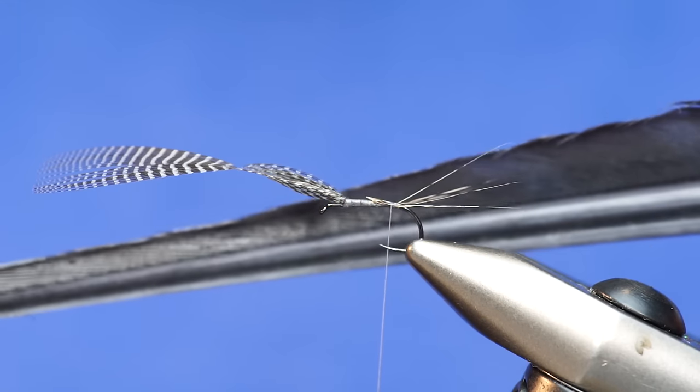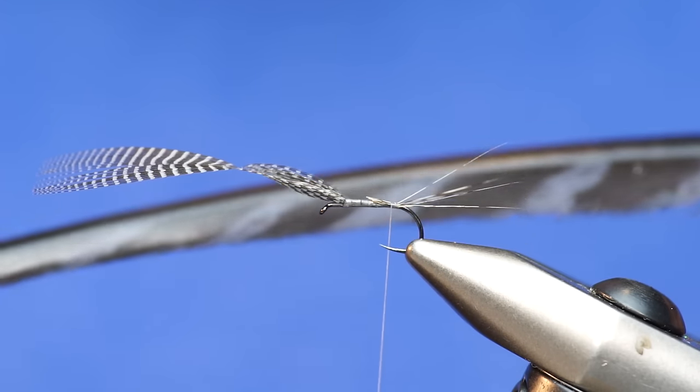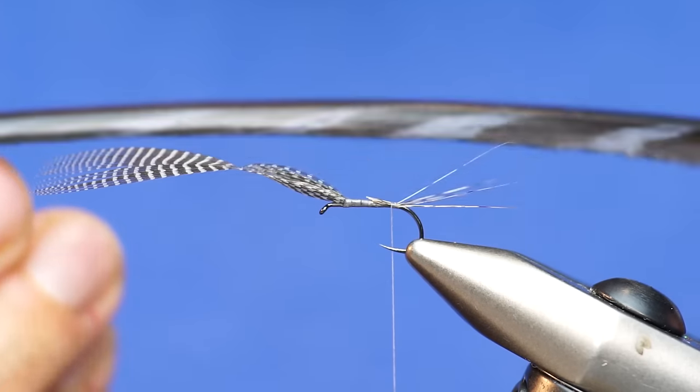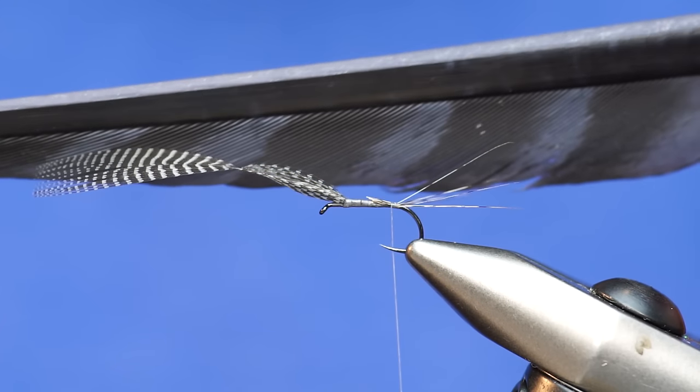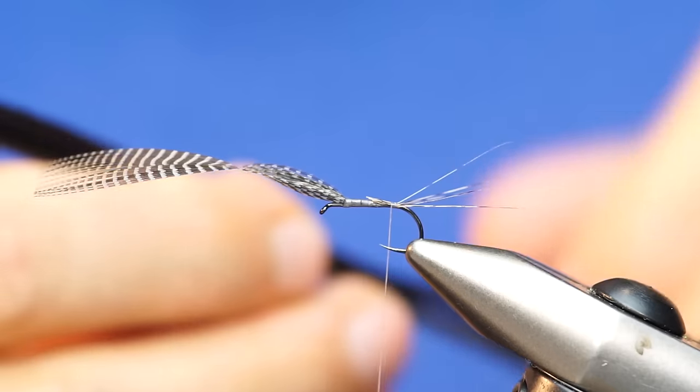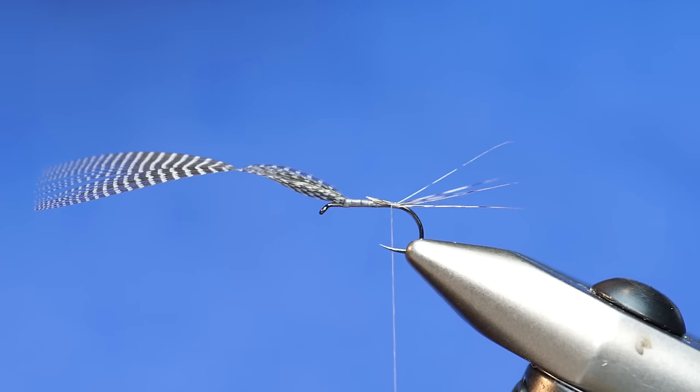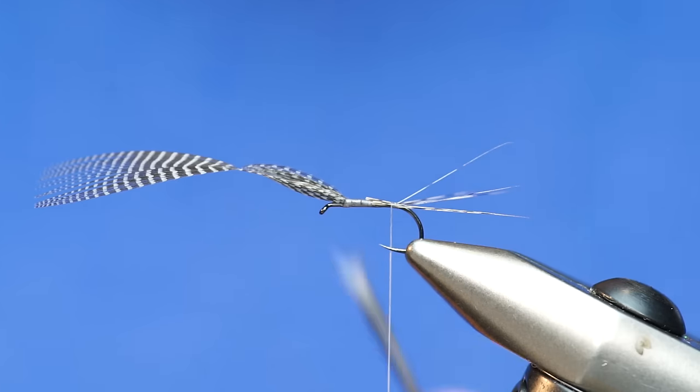Now I'm going to grab some of these barred wild turkey biots from Nature Spirit. These things are awesome. They're dyed, but they have the natural barring on them. What you'll get with the fibers is that when you wrap these along the hook, it's going to create a natural segmentation. They're great for mayfly bodies, great for midge bodies.